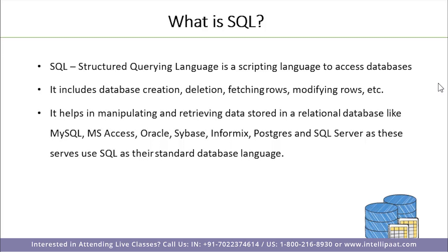A database is simply nothing but a collection of tables. When we have a collection of tables, there is a chance that we might have tables that are not interrelated with each other. But in a relational database, there must always be a relationship between tables across databases, making it easy to retrieve data for analysis. MySQL is an example of a relational database — not a non-relational database like MongoDB. PostgreSQL, SQL Server, Sybase, and MS Access are other examples of relational databases.